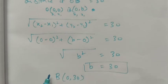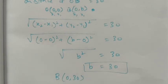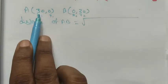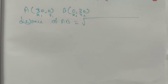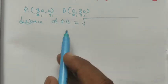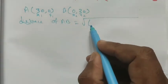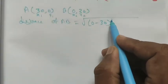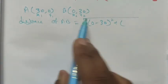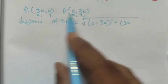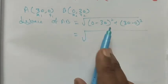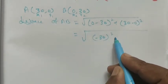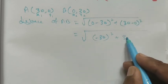A and B are (30, 0) and (0, 30). For the distance between A and B: A is (x1, y1) = (30, 0) and B is (x2, y2) = (0, 30). Using the distance formula: the square root of (0 minus 30) squared plus (30 minus 0) squared, which equals the square root of (minus 30) squared plus 30 squared.